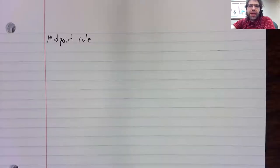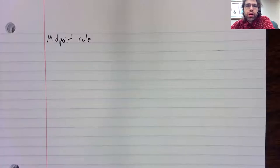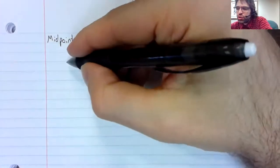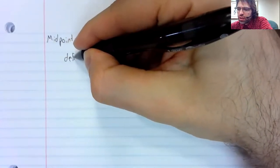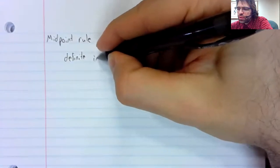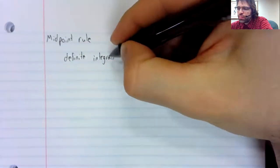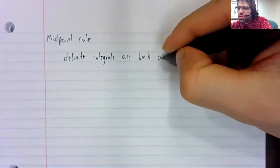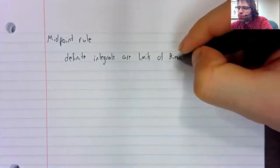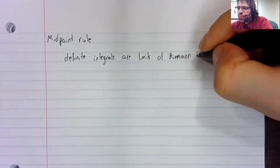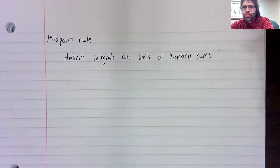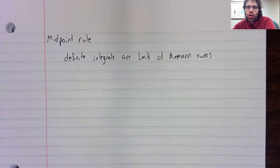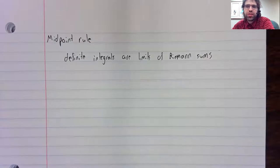Now, we already have a technique for approximating definite integrals. Definite integrals are limits of Riemann sums. Ergo, a Riemann sum can be used to approximate a definite integral.